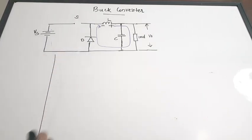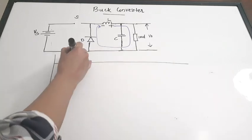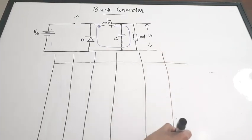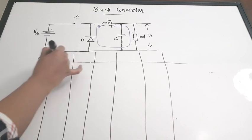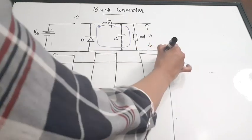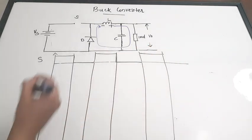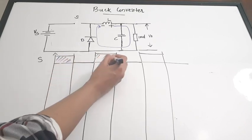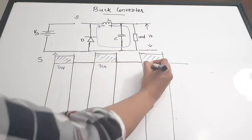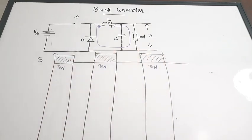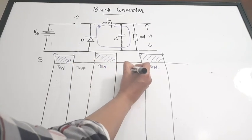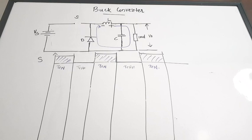Now let us look at the waveforms. We take two cases: switch ON then switch OFF, repeating in cycles — switch on, switch off, switch on, switch off. The switch-ON duration is T_on and the switch-OFF duration is T_off. First we draw the V_out waveform.